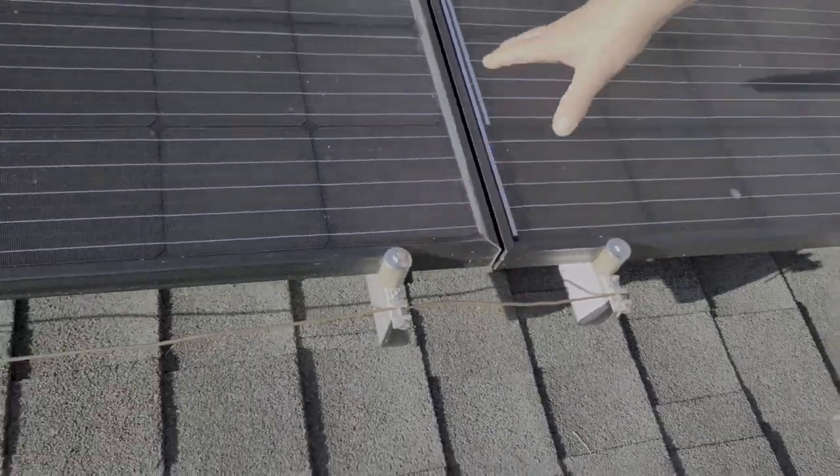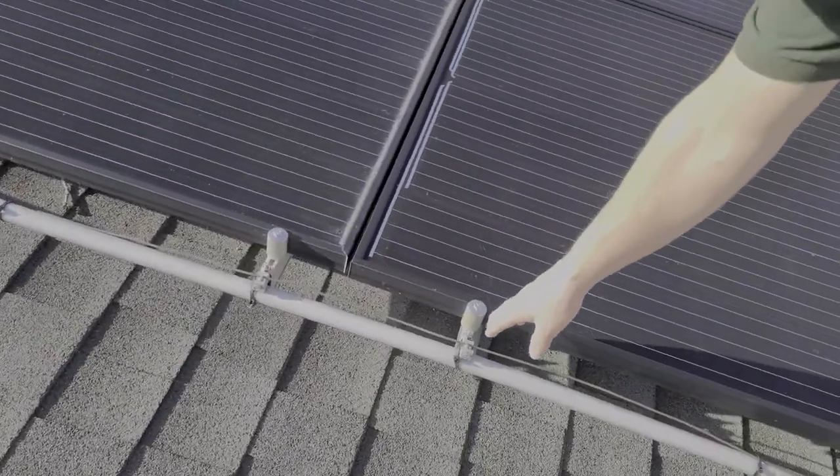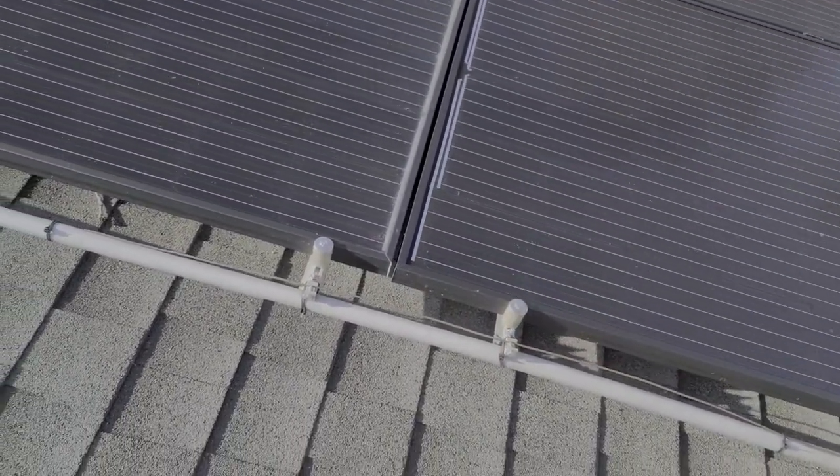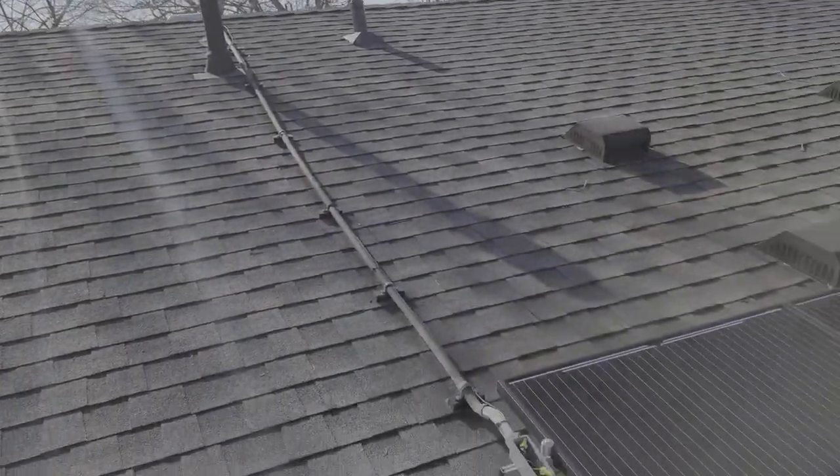I started on this one and grabbed this one for the first two rows and then we come up and I did the same for the next two rows here and here. Now I run this up and over the roof to the other string and down to the combiner box and we'll see that in just a minute.